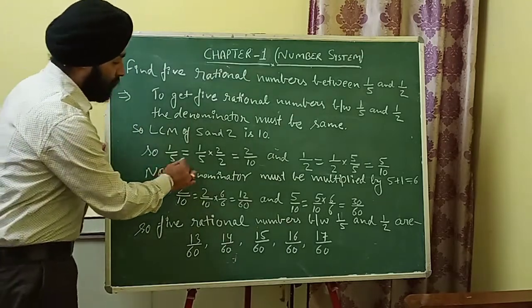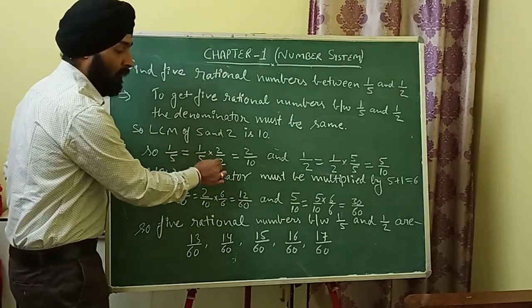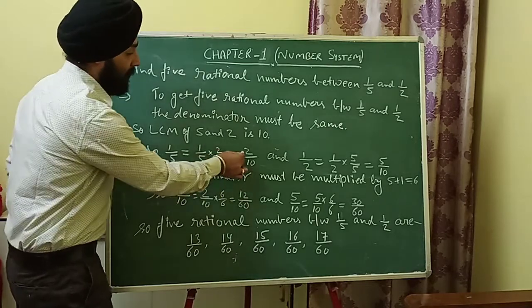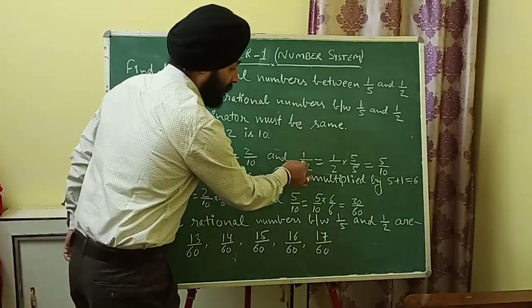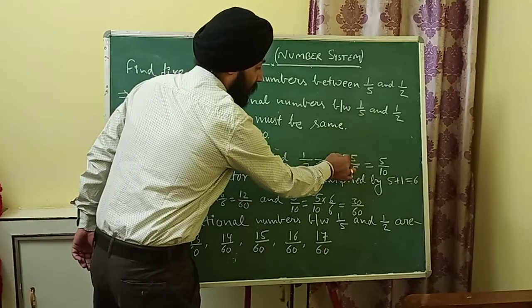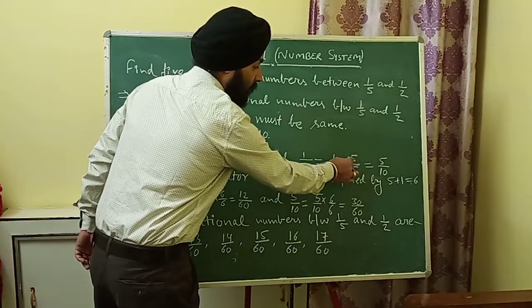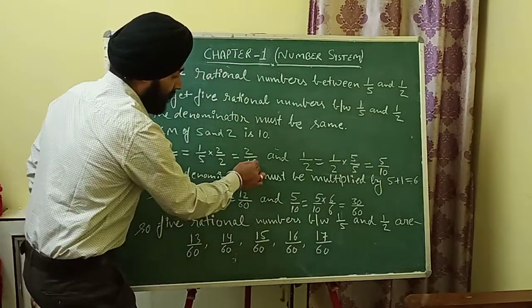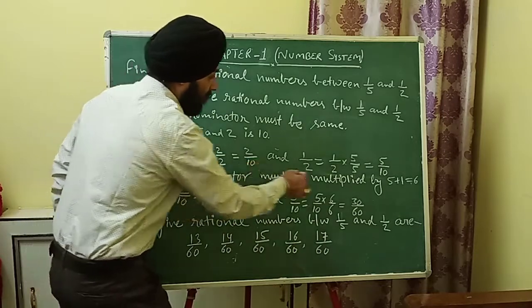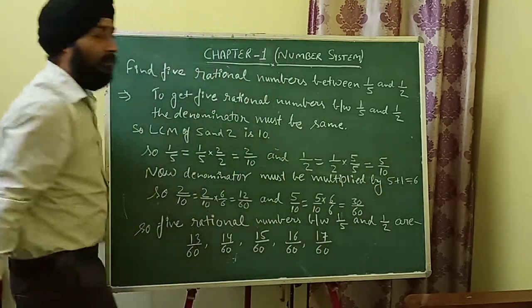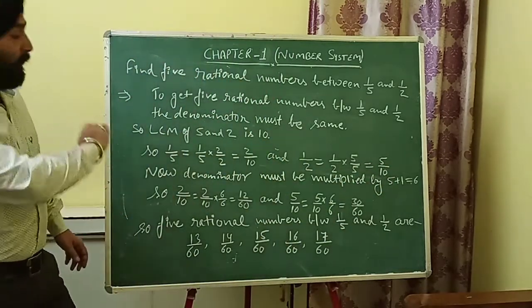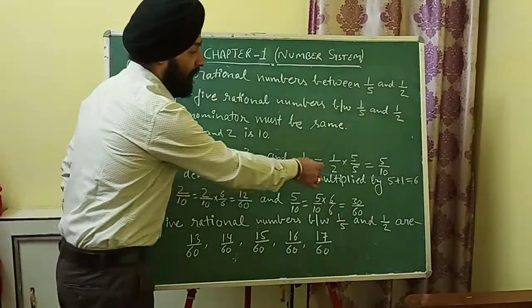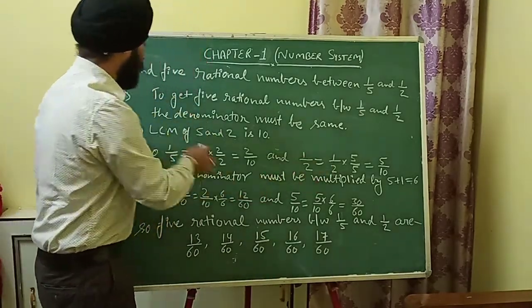To get five rational numbers between 1/5 and 1/2, the denominator must be the same. LCM of 5 and 2 is 10. So 1/5 = (1×2)/(5×2) = 2/10, and 1/2 = (1×5)/(2×5) = 5/10. Now both denominators are 10.